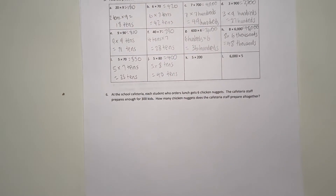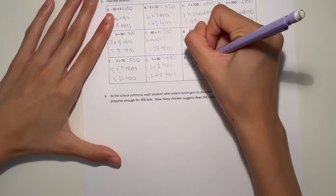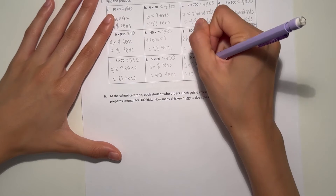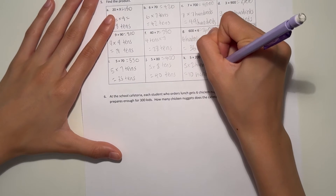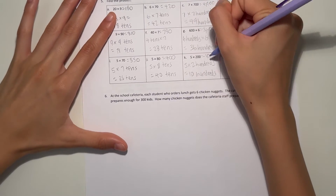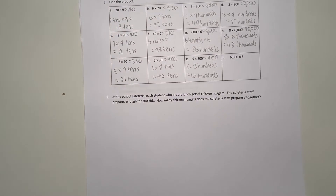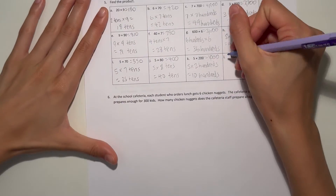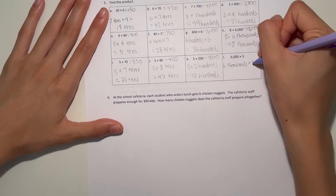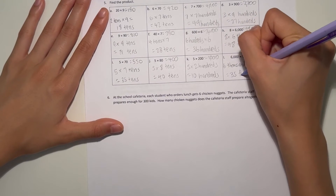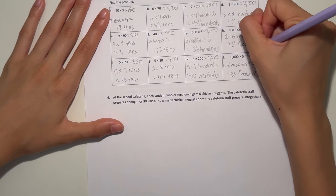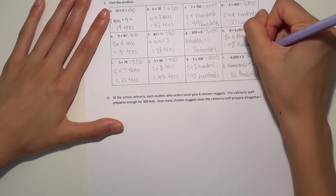K: five times two hundred. Five times two is ten, so we have ten hundreds. Ten with two more zeros at the end — that's one thousand. L: six thousand times five — six thousands times five. Six times five is thirty, and we write the thousands. Thirty thousands — just write thirty and add the three zeros at the end. Thirty thousand.